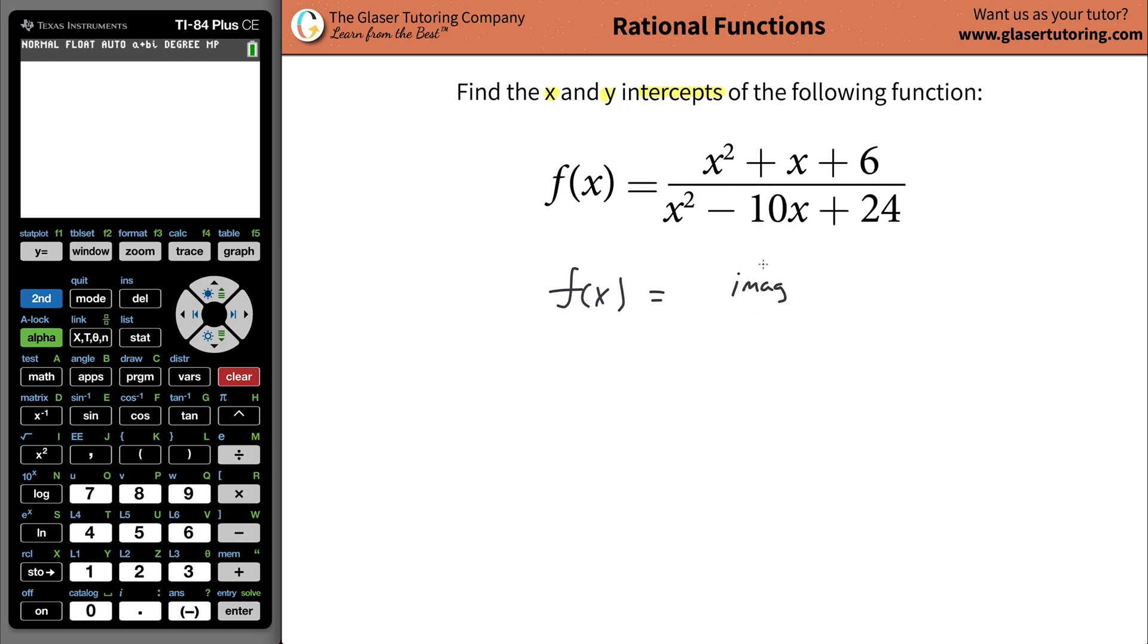Now I'm not really worried about this. Remember the whole goal is to see if factors will cancel. If I have imaginary roots on the top and imaginary roots on the bottom, I'd want to investigate further. But if these are real roots on the bottom and imaginary on the top, I know there's going to be no common factors.